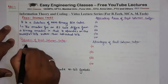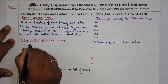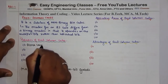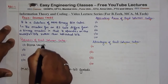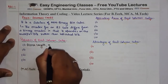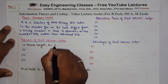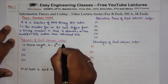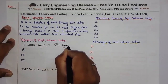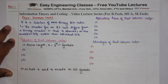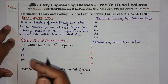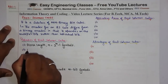Block length कितनी होती है — block length जो कि है n, it is given by 2 to the power m minus 1 symbols. So Reed Solomon code में जो block length है वो 2^m − 1 है।